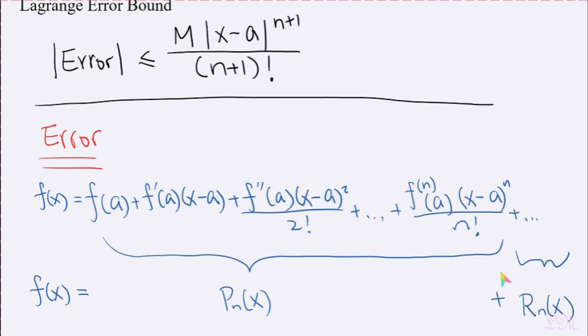So usually we don't want to or we cannot evaluate the infinite polynomial at a given x value. So instead of using the infinite Taylor polynomial, we usually only use the nth degree Taylor polynomial to approximate f of x. So if we are only using P sub n of x to approximate f of x, the R sub n of x here, the remainder really is the error of our approximation.